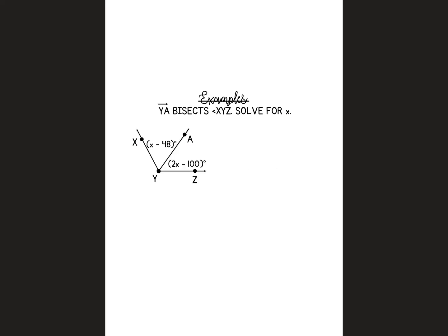This next one says YA bisects XYZ. So if YA is cutting XYZ in half, we know that these two angles here and here are equal. So we're going to do x minus 48 equals 2x minus 100.